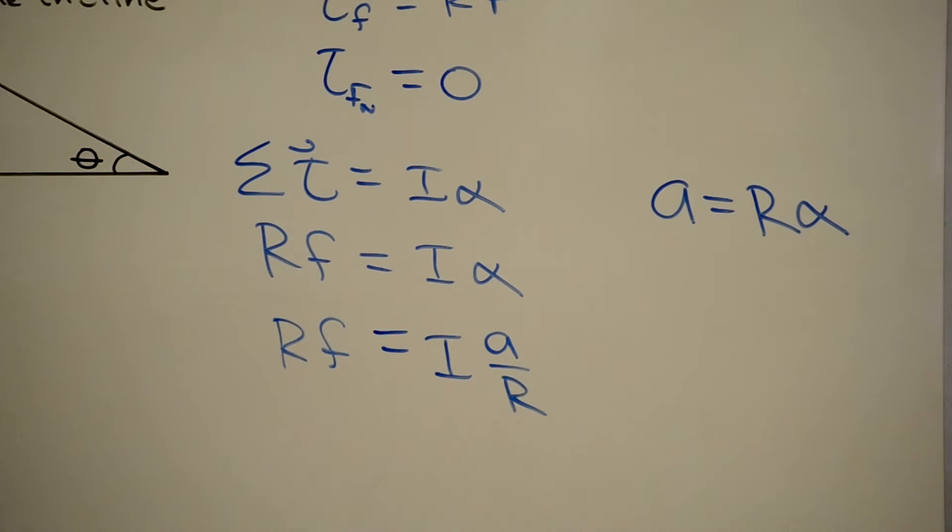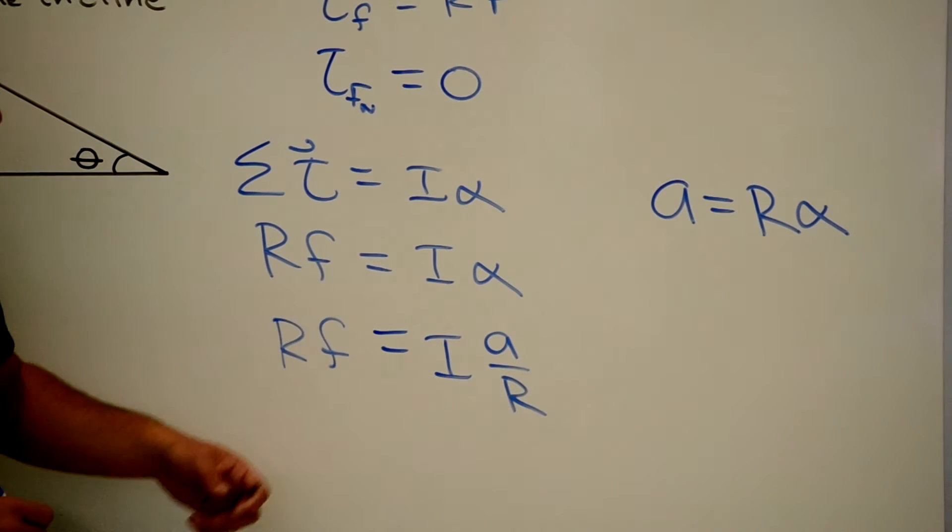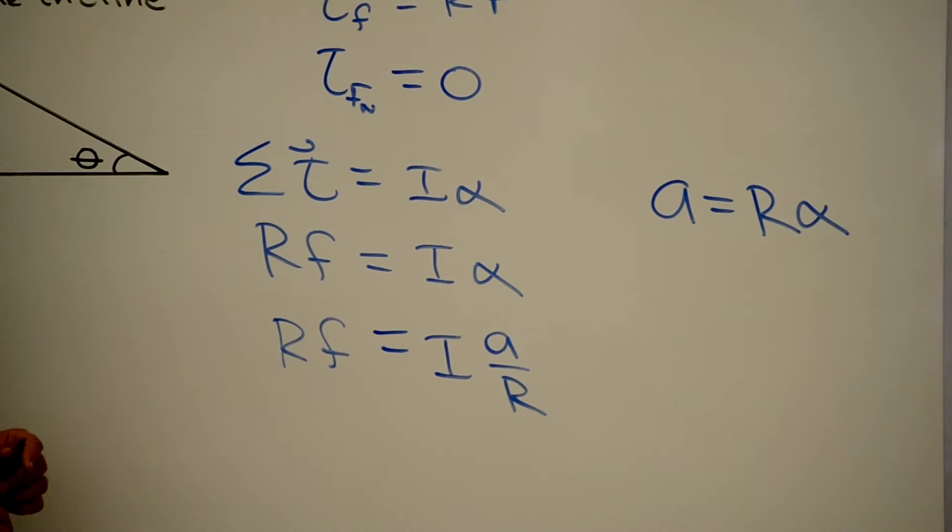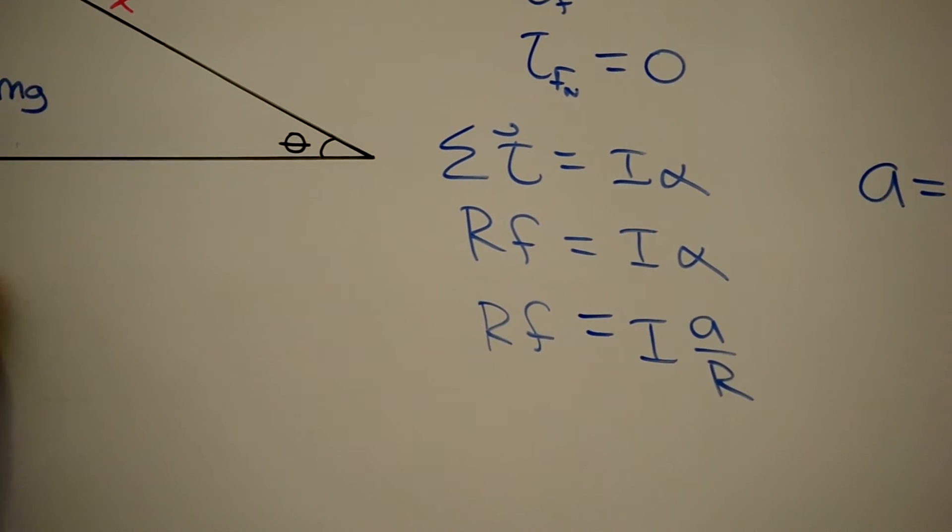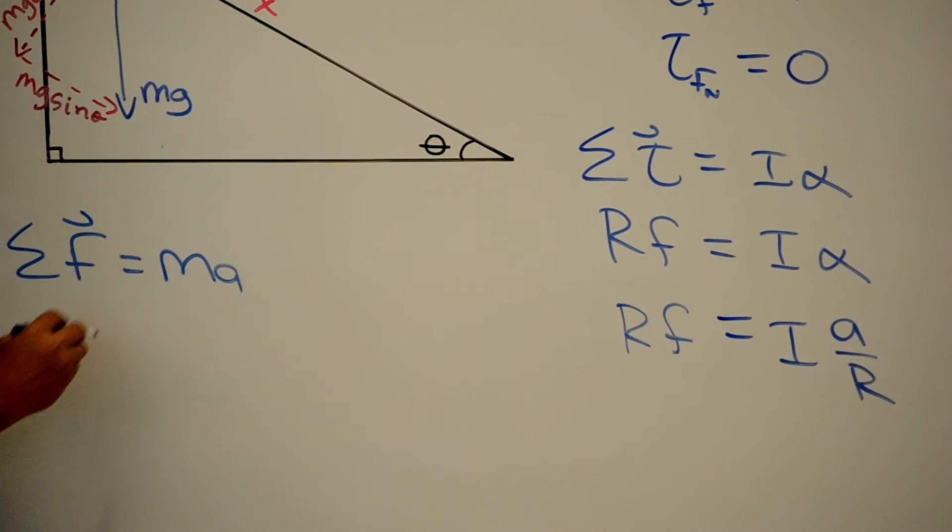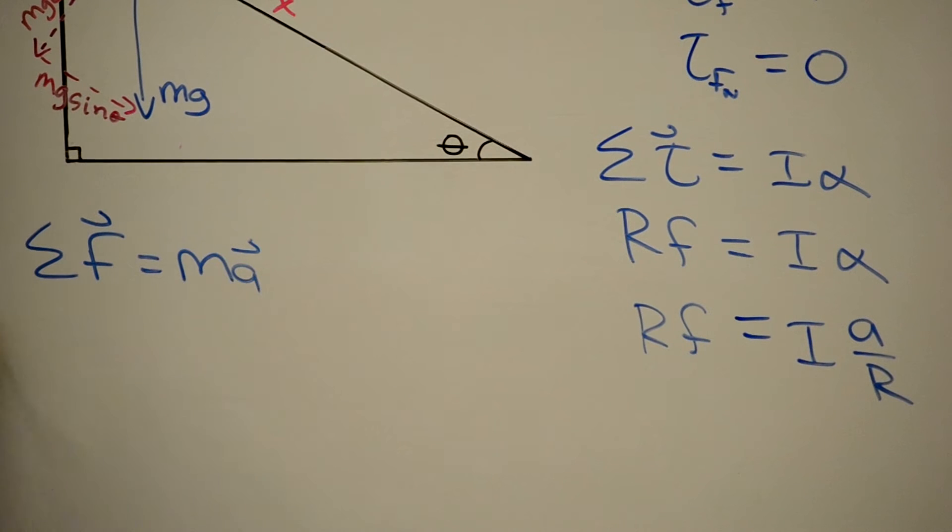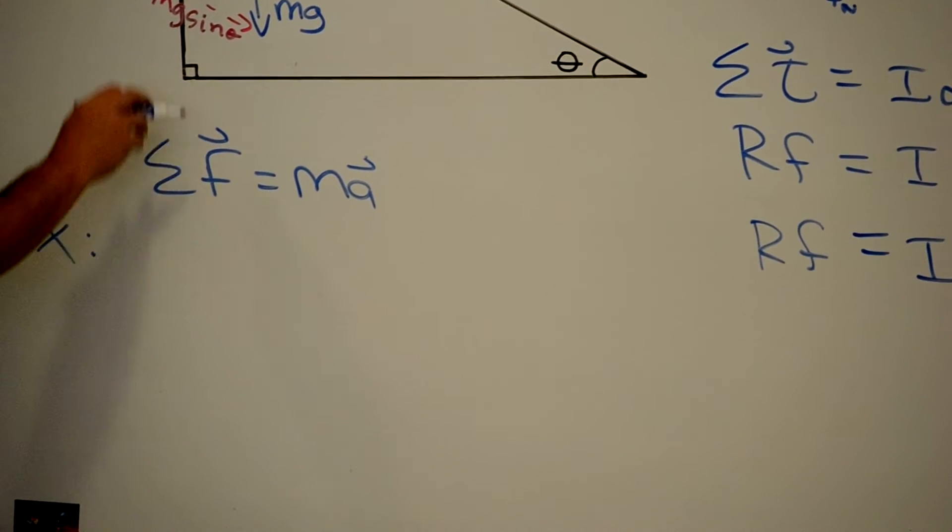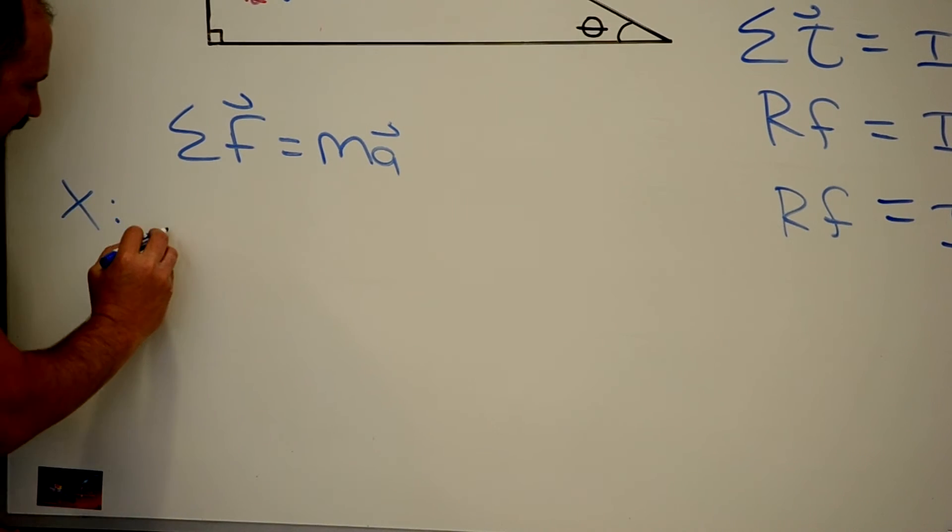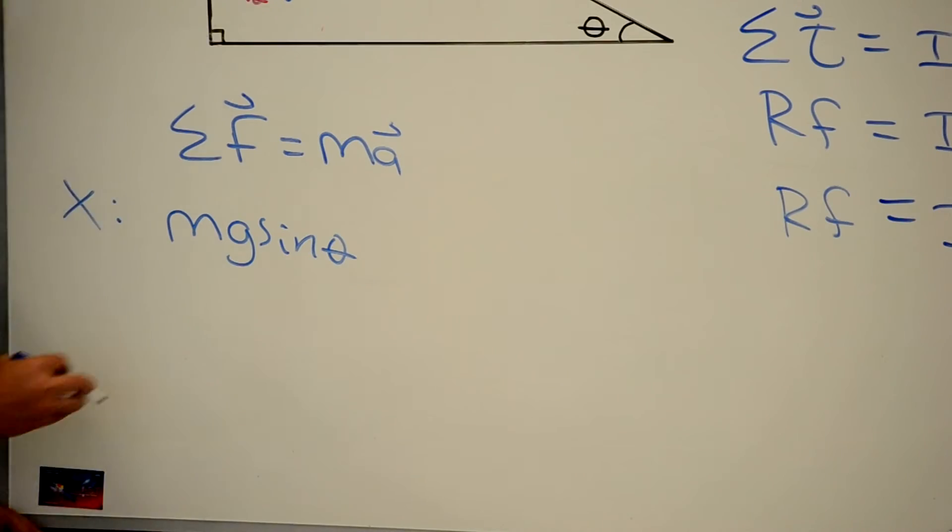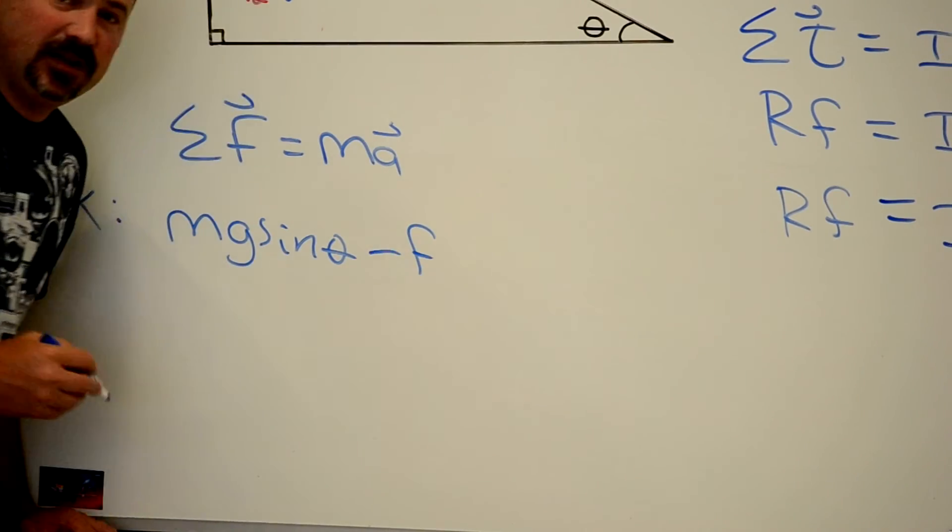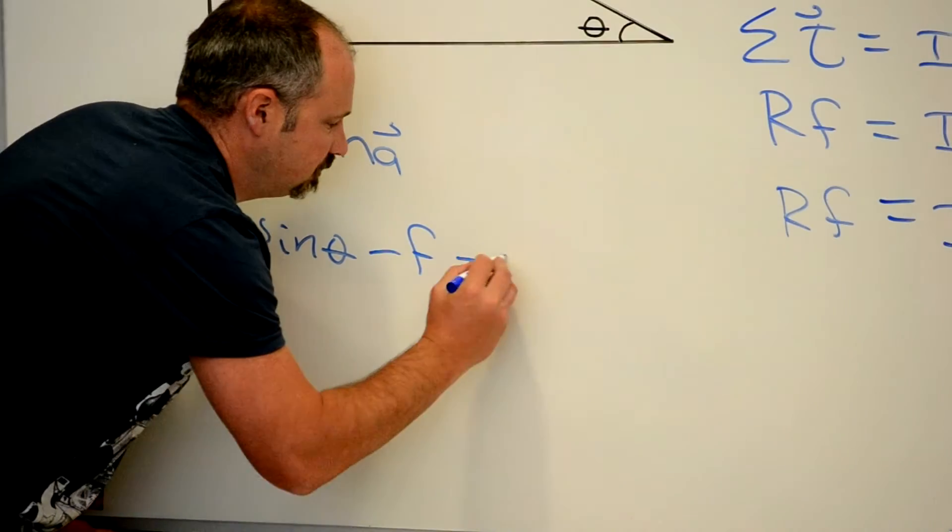Let's stop here for now because we need to figure out what the frictional force is. And we can use Newton's second law to do that. So sum of the forces equals ma. And let's talk in the x direction. So along the x-axis, what do we have? We've got mg sine theta going down the incline. And we have the force of friction in the other direction. And all that equals ma.